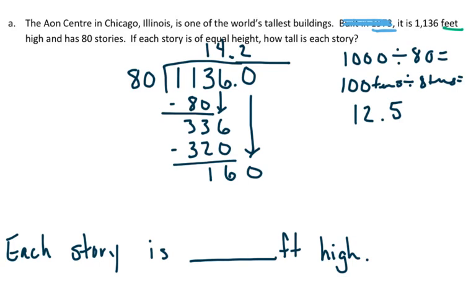So 2 times 80 is 160. Carrying out that decimal point helps with this problem. So each story is 14.2 feet high or 14 and 2 tenths high.